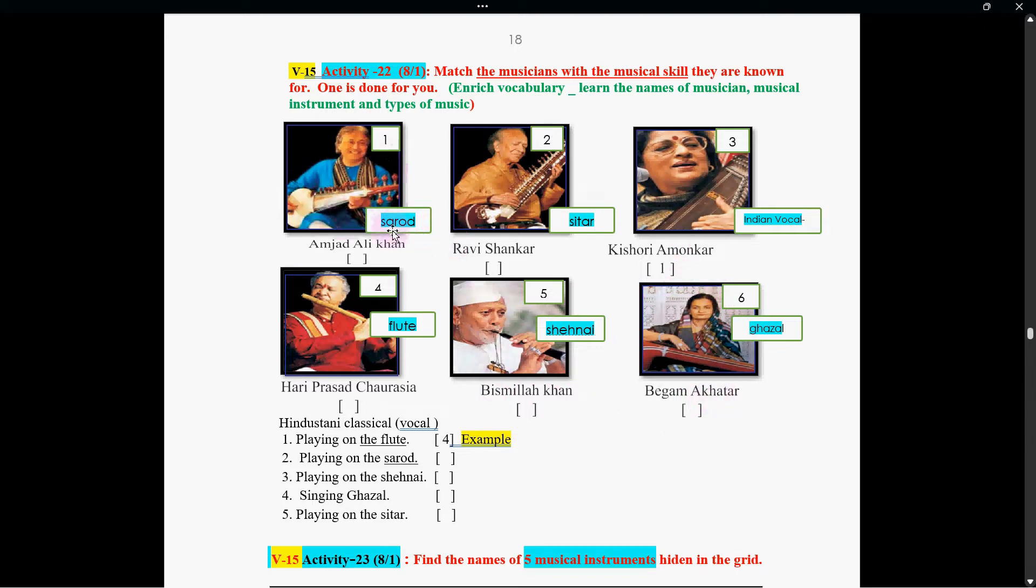Now, number one has the Sarod. This musical instrument is Sarod. This is Sitar. And she is singing Indian Vocal. Number four, he is playing the flute. And number five, he is playing the Shehnai. That is Bismillah. Number six, she is singing Ghazal, Begum Akhtar.